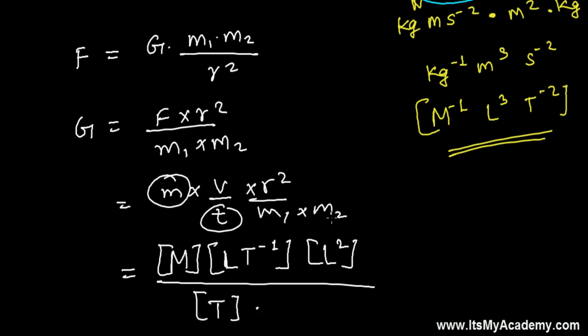The dimensional formula of this R squared - that is distance squared - is again L squared. And divided by T, that is time. Times mass times mass - so there are two masses, mass 1 and mass 2. Now a few things are being cancelled. This mass and this mass.